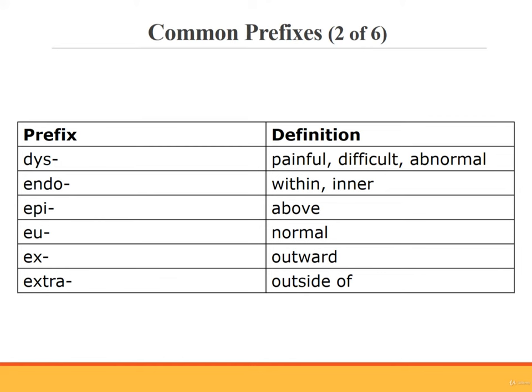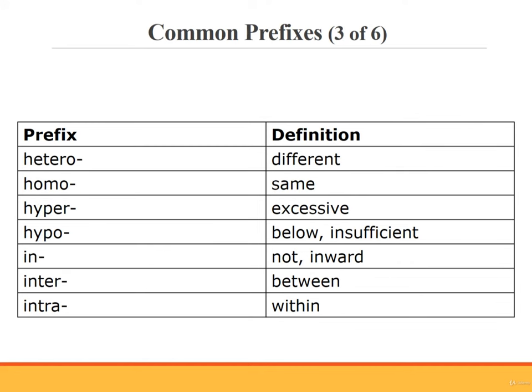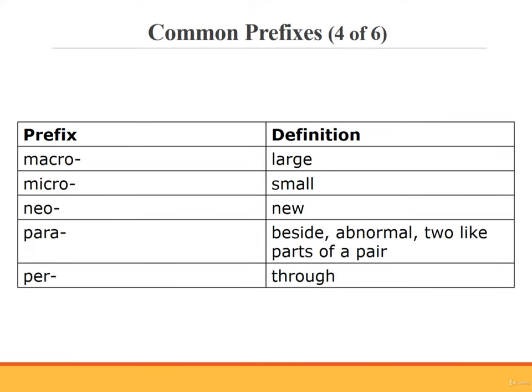An example of a term using the prefix dys is dyspnea. The medical term means difficulty breathing. Endo. Epi. Eu. Ex. Extra. Hetero means different. An example of a medical term using the prefix hetero is heterograft. This medical term means a skin graft from another species. Homo. Hyper. Hypo. In. Inter. Intra. Macro.